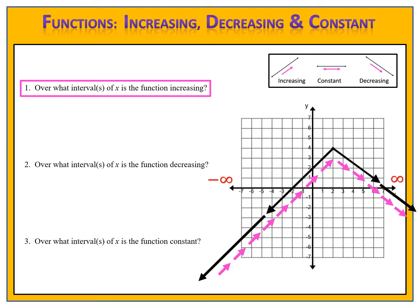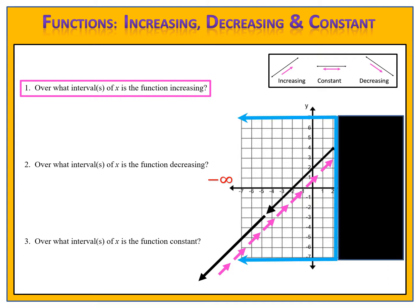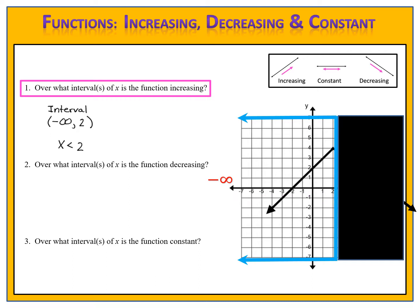Now let's begin by answering the first question: over what interval or intervals of x is the function increasing? Look at the graph and identify where the function is increasing. We draw our line so we can see where the interval begins and ends. The interval ends at the blue line, but where does it begin on the left-hand side? The reality is the graph continues in that direction forever — it goes toward negative infinity. Looking down at the x-axis, we see the interval is from negative infinity up to 2. Therefore, the interval where the function is increasing is from negative infinity to 2. You could write that using interval notation, or using a simple inequality: x is less than 2.